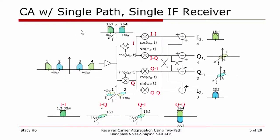An alternative to having two independent paths is a receiver with a single path and a single IF. In this architecture, there is a single LNA followed by a single quadrature down-conversion mixer to an IF frequency with the LO placed between the two carriers. This is followed by a second down-conversion to baseband. In this architecture, only a single RF synthesizer is needed. The baseband I and Q components are separated by appropriately combining and subtracting the four components after the IF down-conversion.